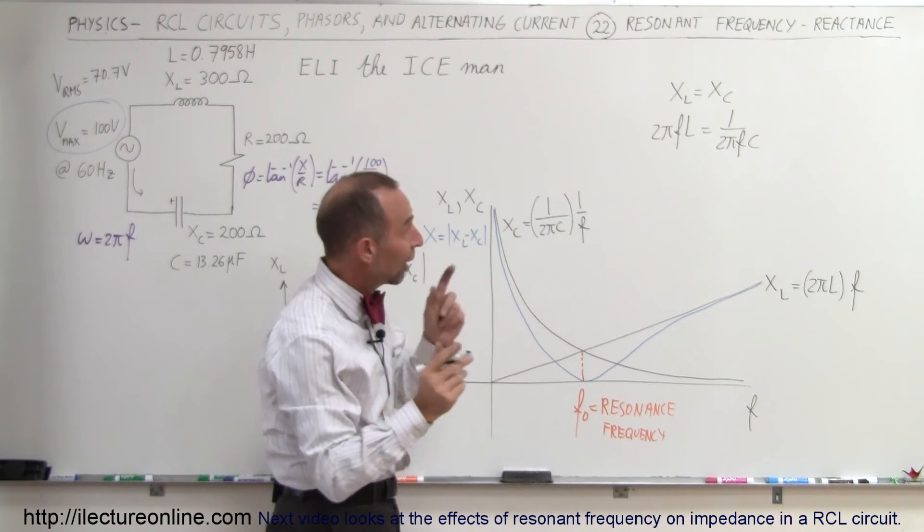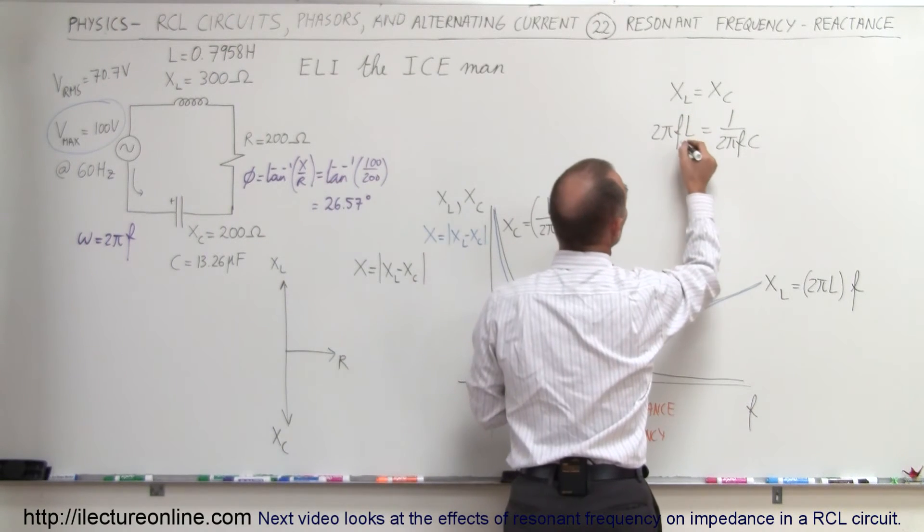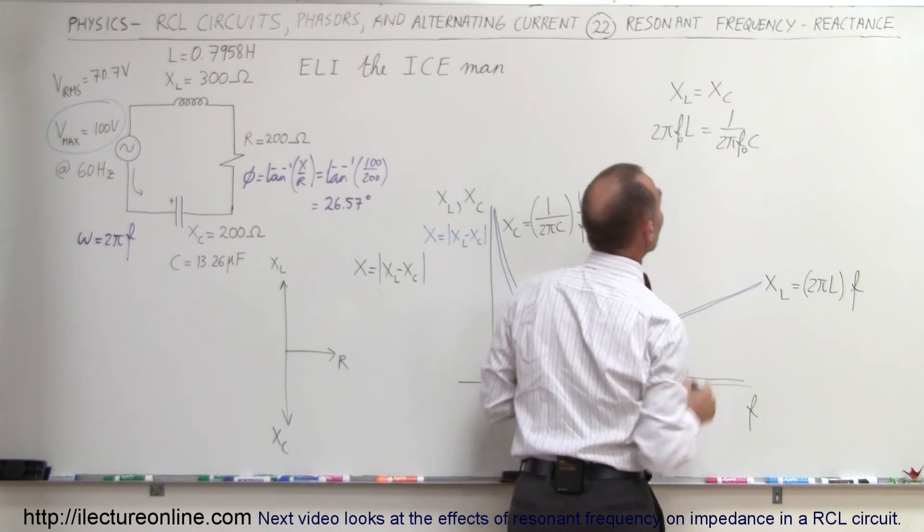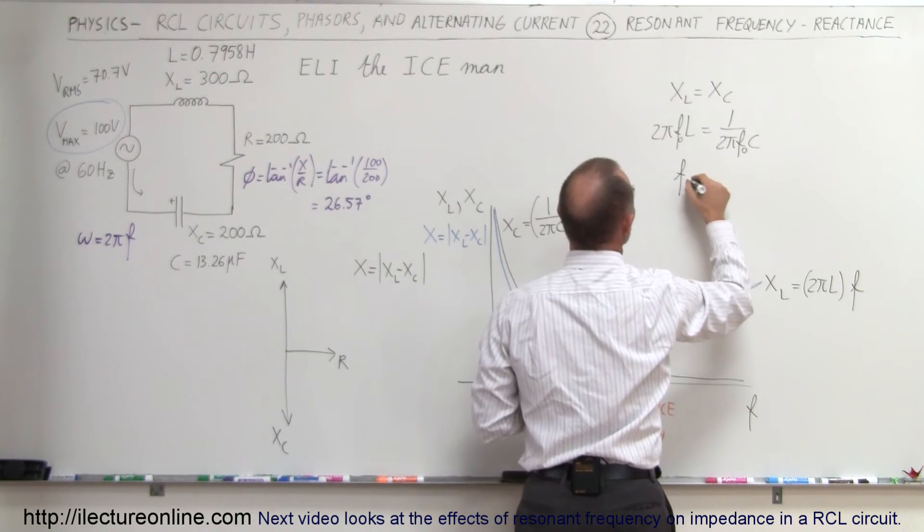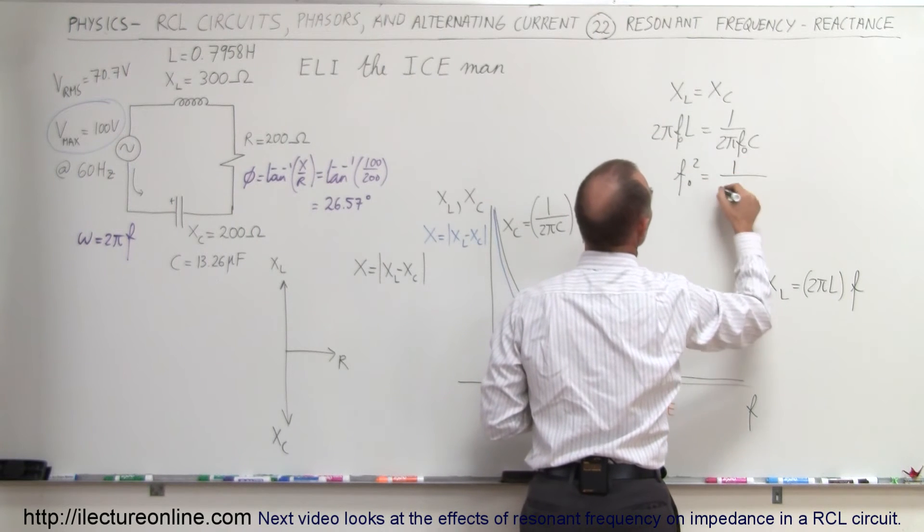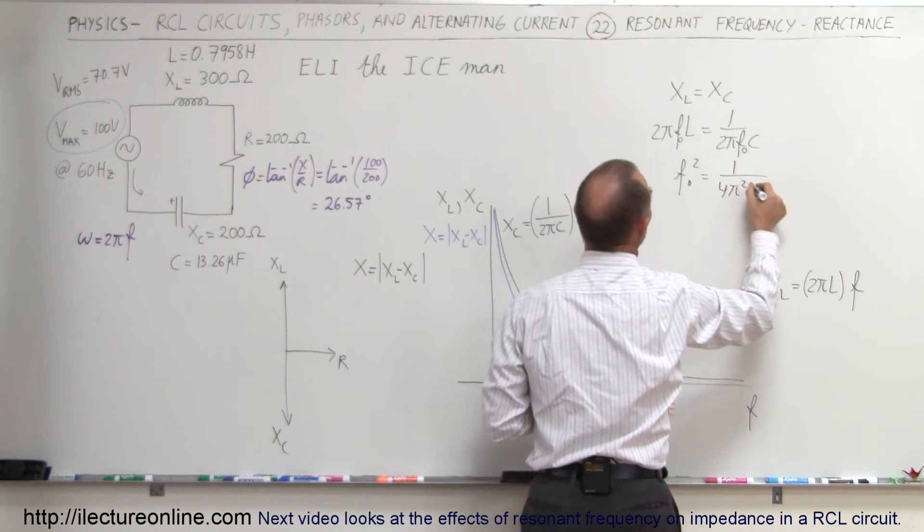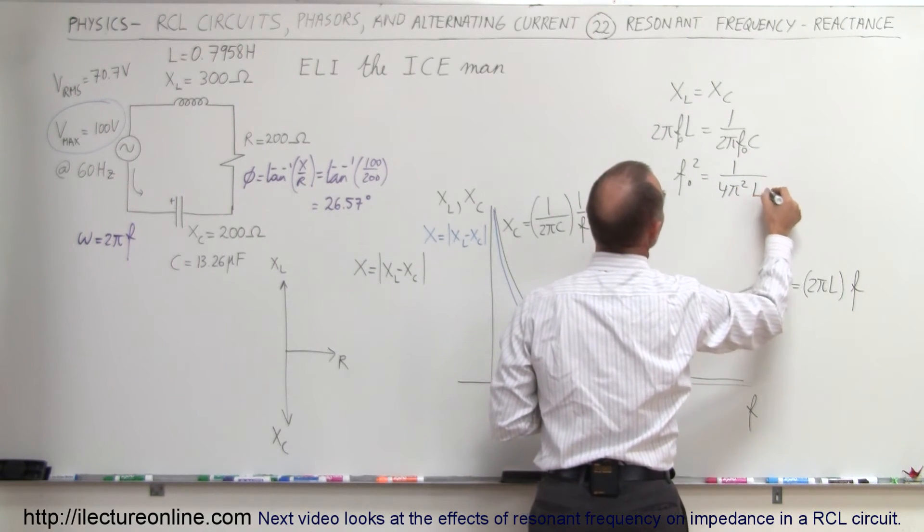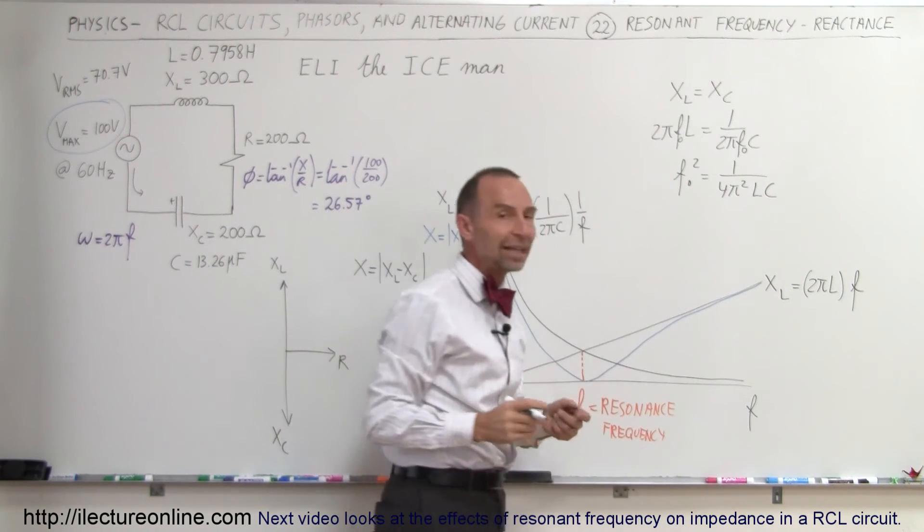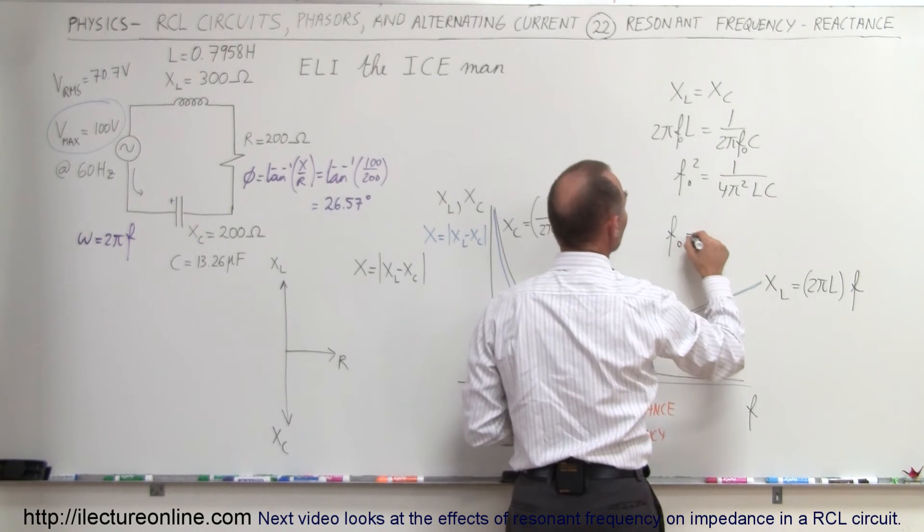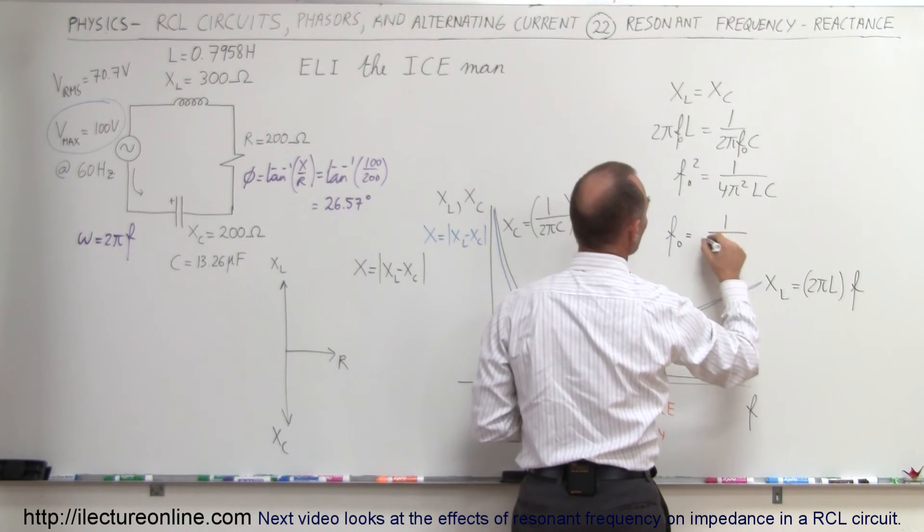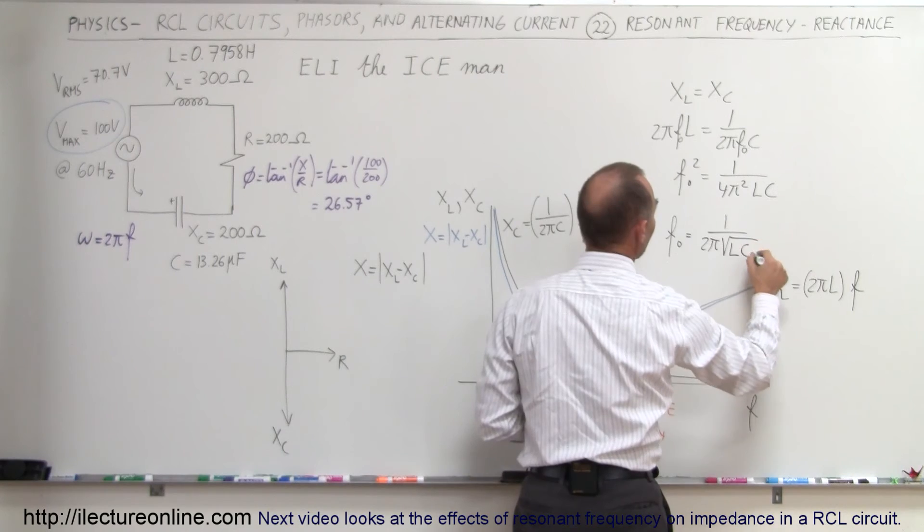When they're equal to each other, that's when we're at the resonant frequency. Putting all the f's over there, we have f sub naught squared is equal to 1 over 4π² times L times C. Then if we take the square root of both sides, we can see that the resonance frequency can be found by taking 1 over 2π times the square root of L times C.